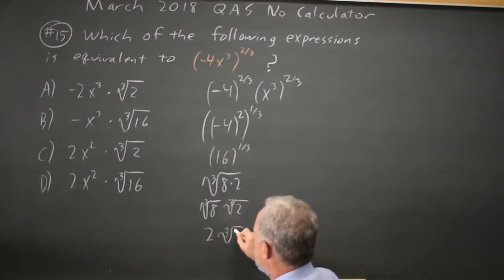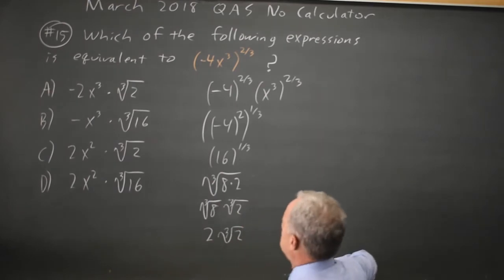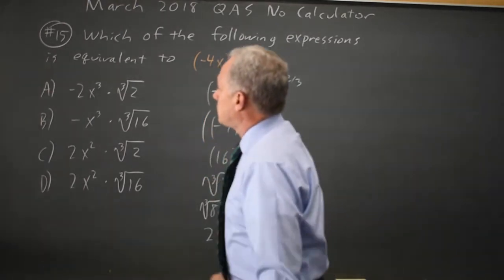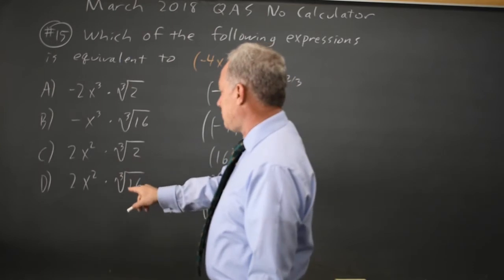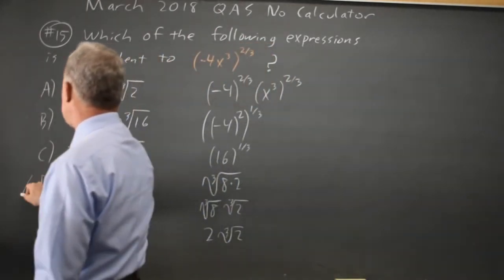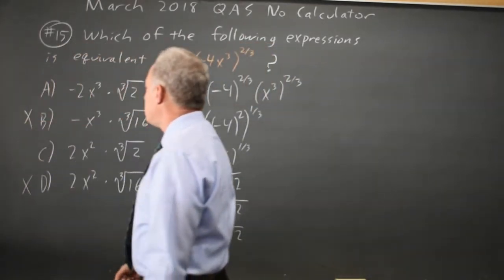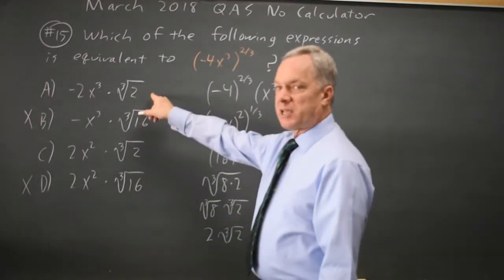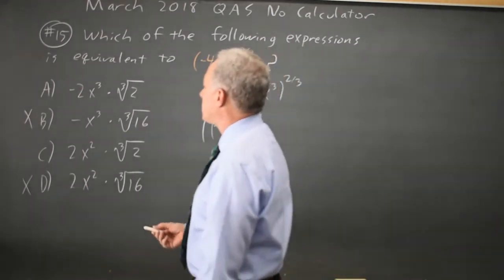So it's 2 cube root 2 is our constant which is either a or c. It's not d and it's not b and we know it's not a because a has a negative and we just squared the negative to get a positive.